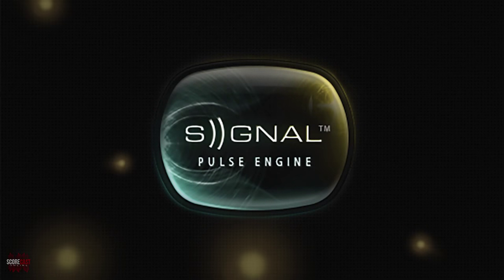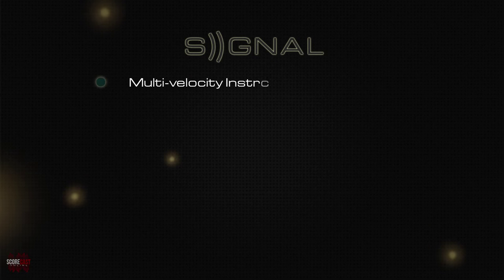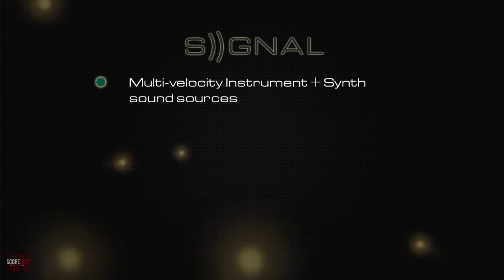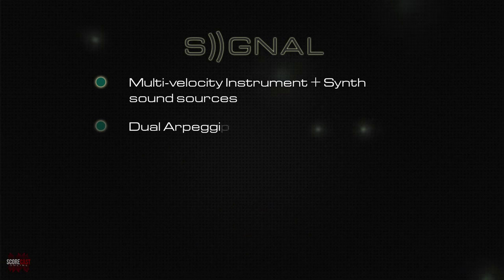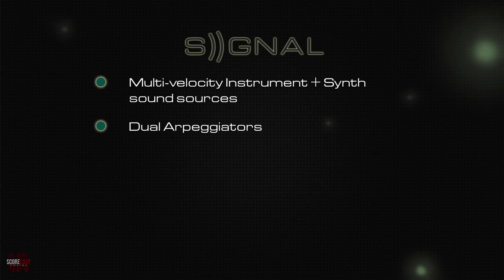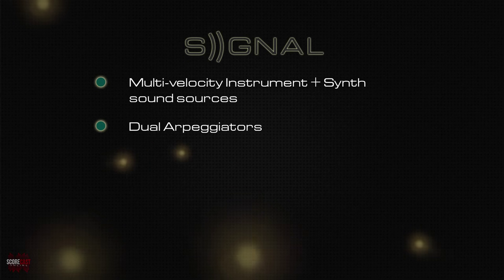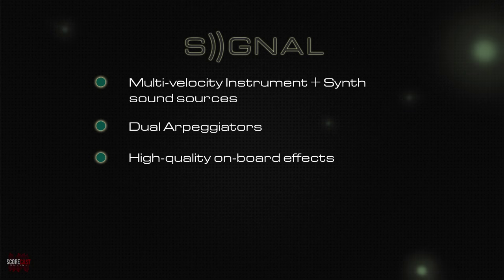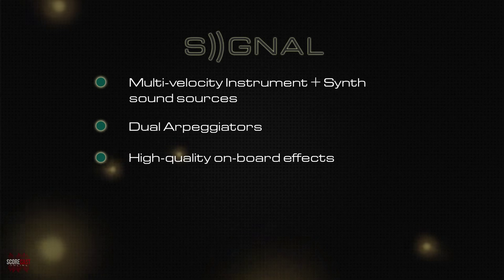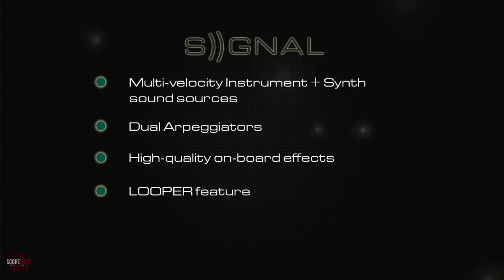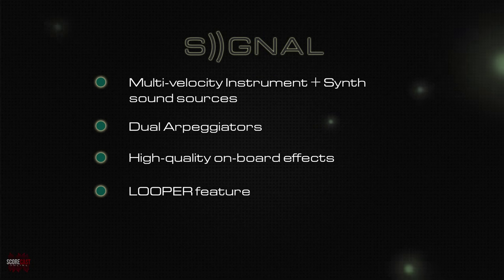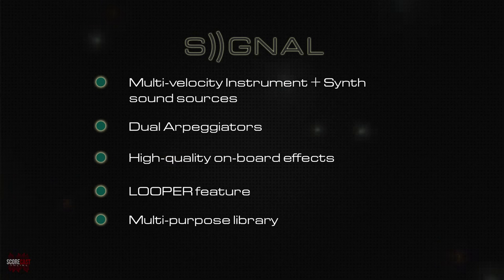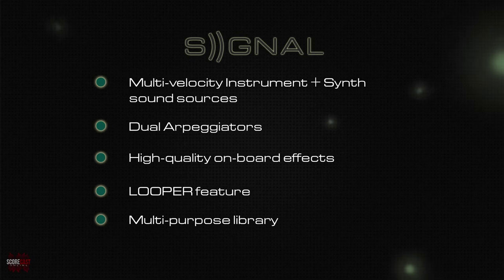Let's now have a look at some of the features that make Signal a unique library. The raw materials, called sound sources, have all been recorded in multi-velocity layers, and comprised of a large range of real organic instruments and synthesized sounds to suit all tastes. Signal is the only library in the market featuring dual arpeggiators that can be tweaked and combined in a myriad of different ways. To further shape your sound, Signal offers an array of high-quality on-board effects, including a convolution reverb unit with unique impulse responses recorded especially by the Output team. Signal also includes a unique looper feature that simulates a tape loop on any given sound. And last but not least, Signal is a library of many faces — while it has been primarily designed to create elaborate pulsing sounds, any given sound source or preset can also be used as a playable instrument at the press of a button.